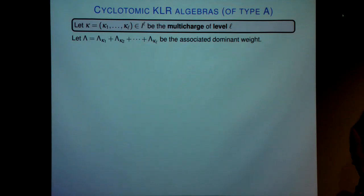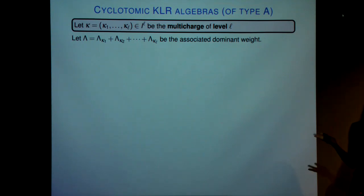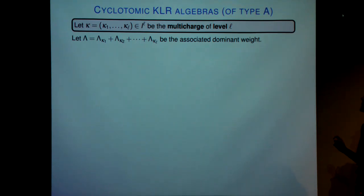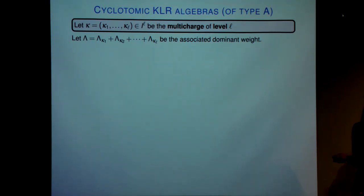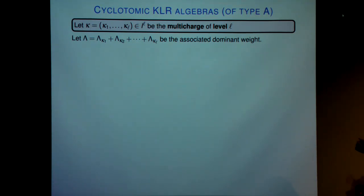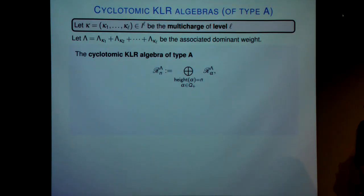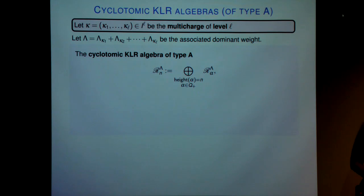The goal is to understand the representation theory of the cyclotomic quotients of these algebras. We're going to have another parameter — our multi-charge — based on our level L. This is an L-tuple of entries in Z mod eZ. For the purposes of this talk, I will be focusing on level one and level two, so we'll just be looking at a bicharge. This has an associated dominant weight, and we take this dominant weight associated with a multi-charge to give us our cyclotomic KLR algebra. We get a decomposition of the cyclotomic algebra of rank n in terms of positive roots of height n.